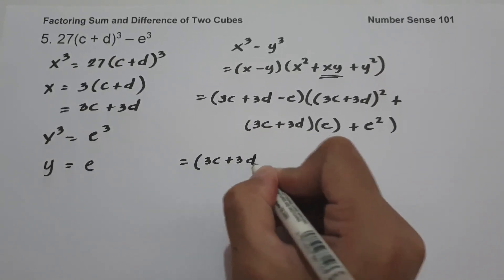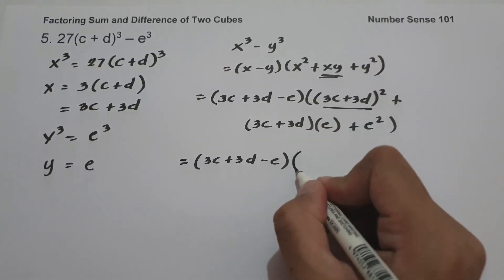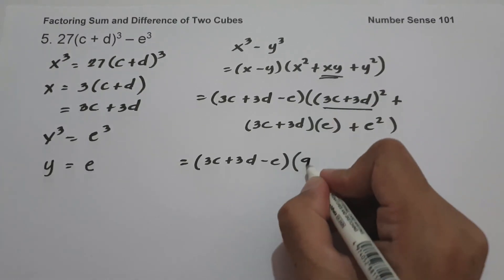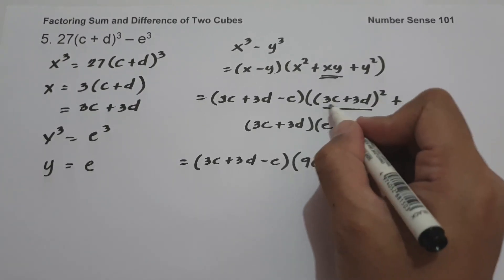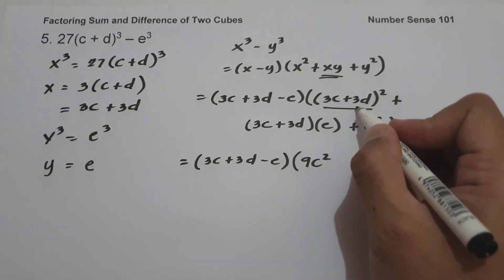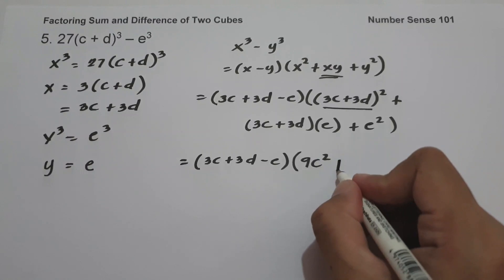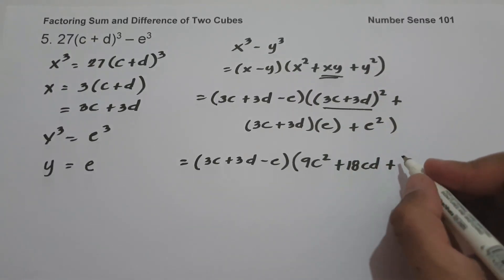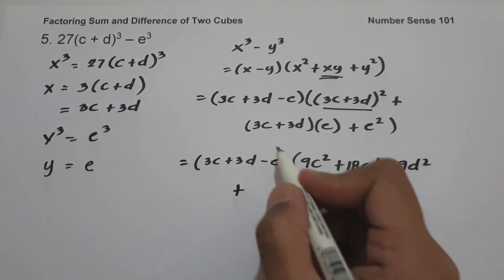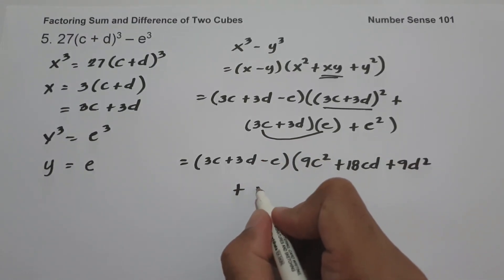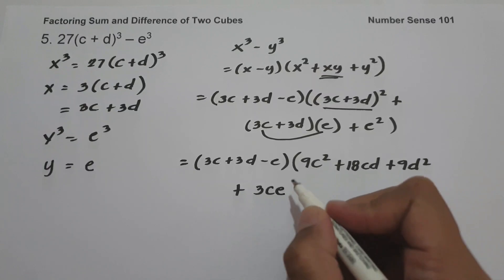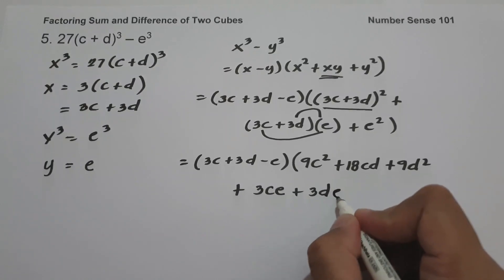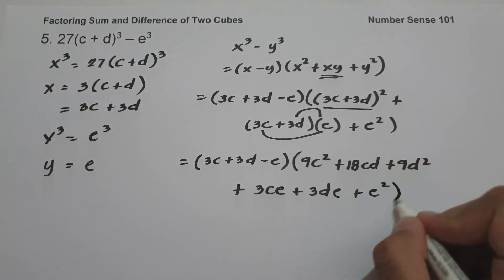To write our final answer: (3c + 3d − e) times the quantity — expanding the square of the binomial: 3c times 3c is 9c², 3c times 3d gives 18cd, and 3d times 3d is 9d² — so we have (3c + 3d − e)(9c² + 18cd + 9d² + 3ce + 3de + e²).